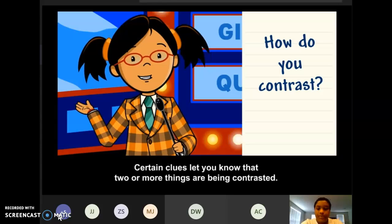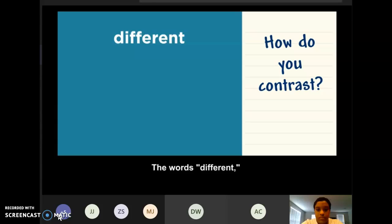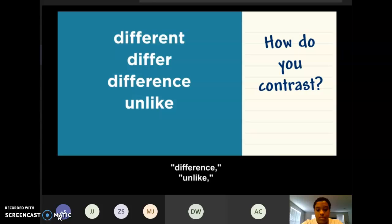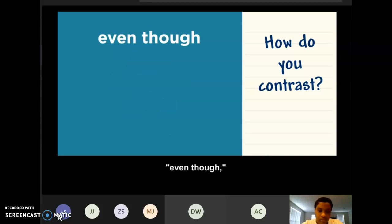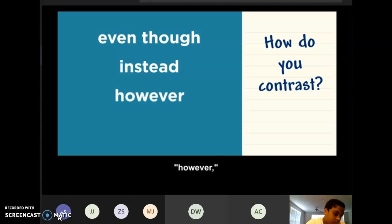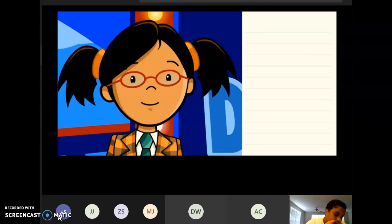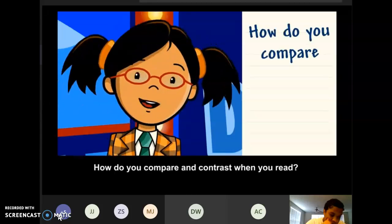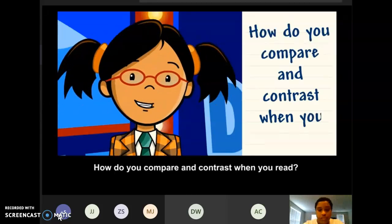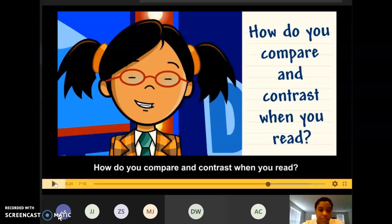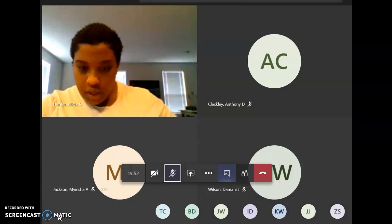Certain clues let you know that two or more things are being contrasted. The words different, differ, difference, unlike, although, even though, instead, however, and on the other hand can signal that the writer is pointing out differences. How do you compare and contrast when you read? Okay, we're going to stop the video here.